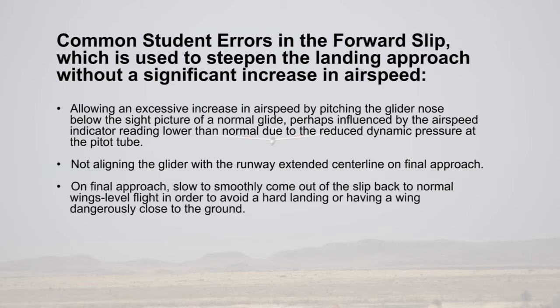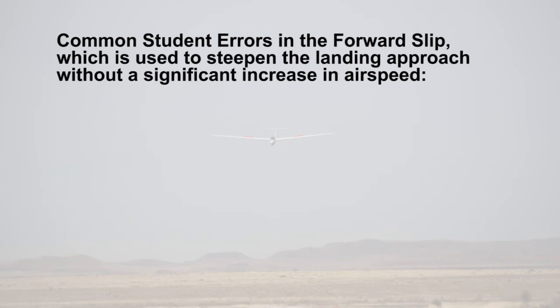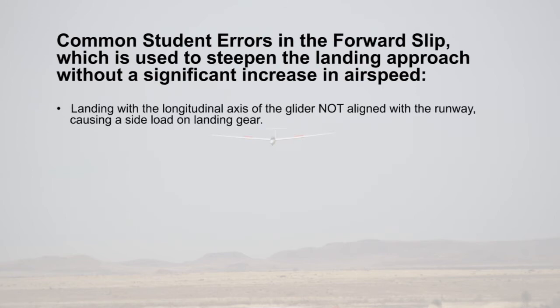On final approach, slow down and smoothly come out of the slip back to normal wings-level flight in order to avoid a hard landing or having a wing dangerously close to the ground. Allowing any crosswind aloft to cause an overshoot of the final approach leg.